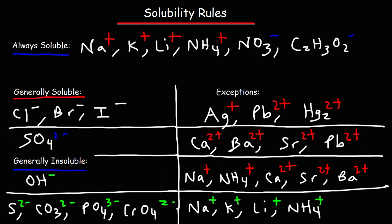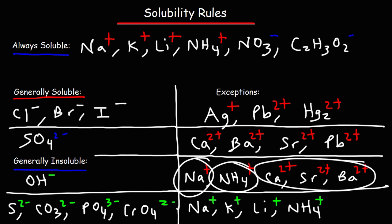Hydroxides are generally insoluble, except with Group 1 metals like sodium, lithium, and potassium, with ammonium, and also the heavier Group 2 alkaline earth metals like calcium, strontium, and barium. Magnesium hydroxide is somewhat soluble in water — that's the borderline. But below magnesium, you have calcium, strontium, and barium, and hydroxide is soluble with those metal ions.